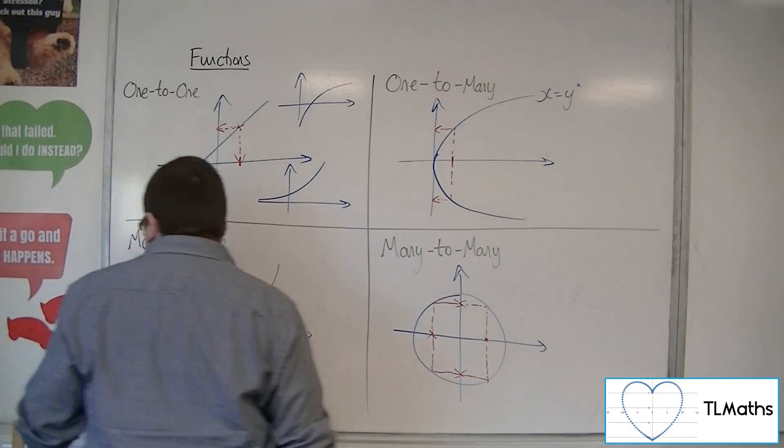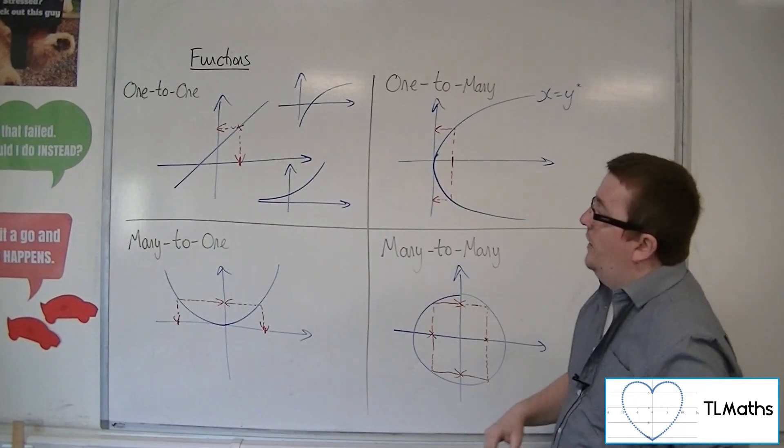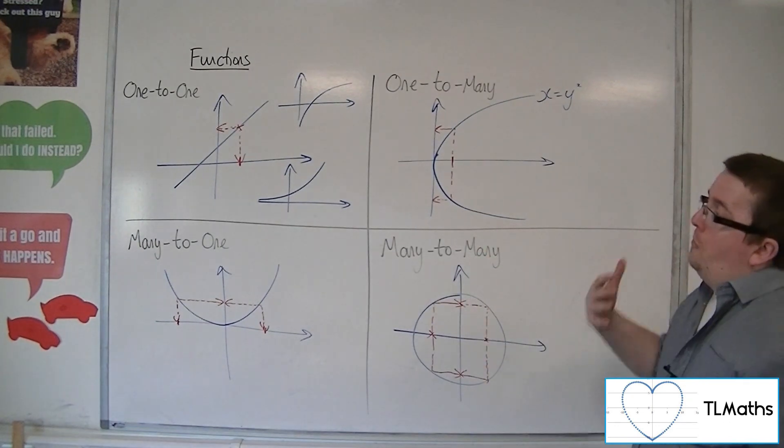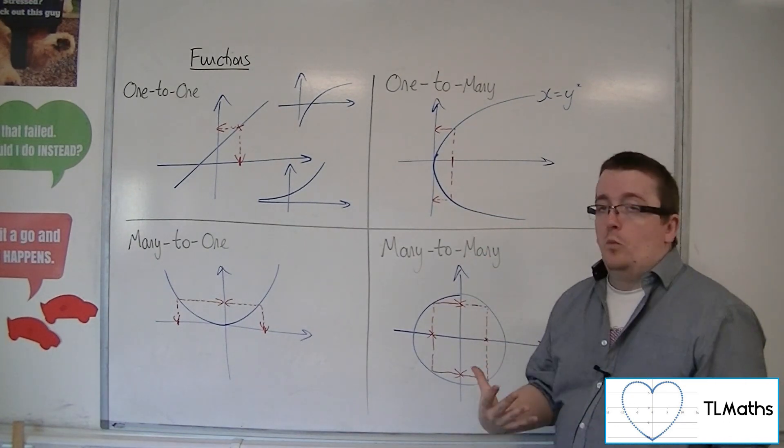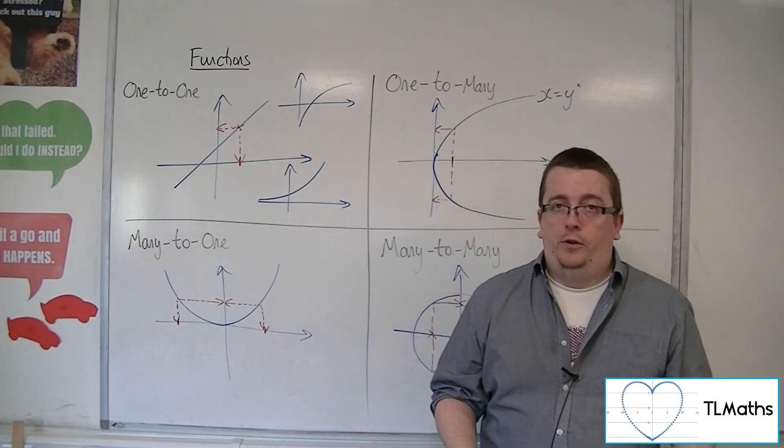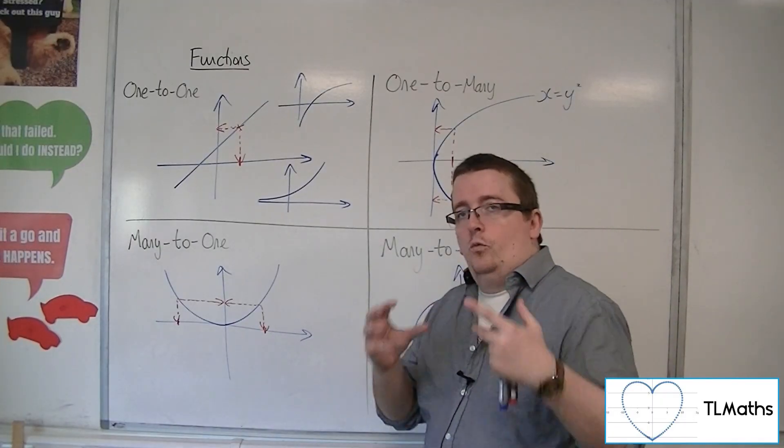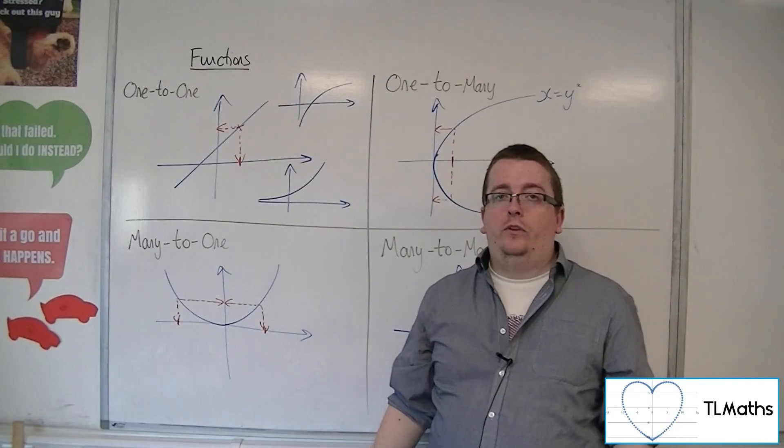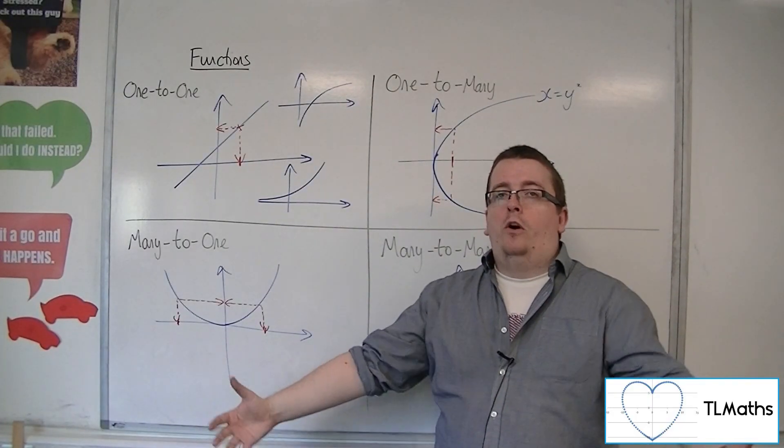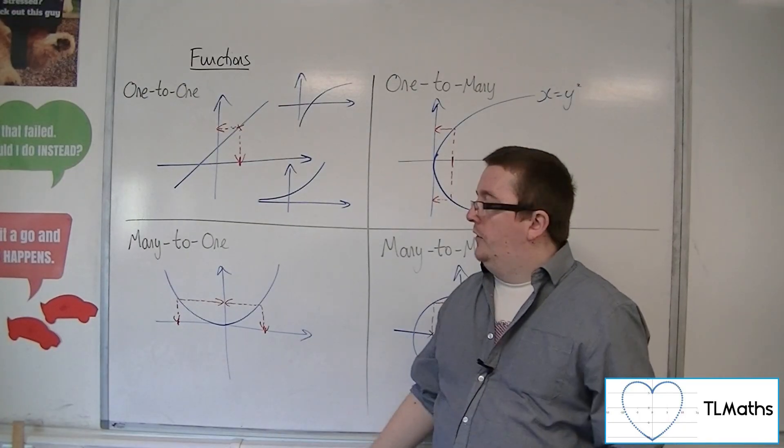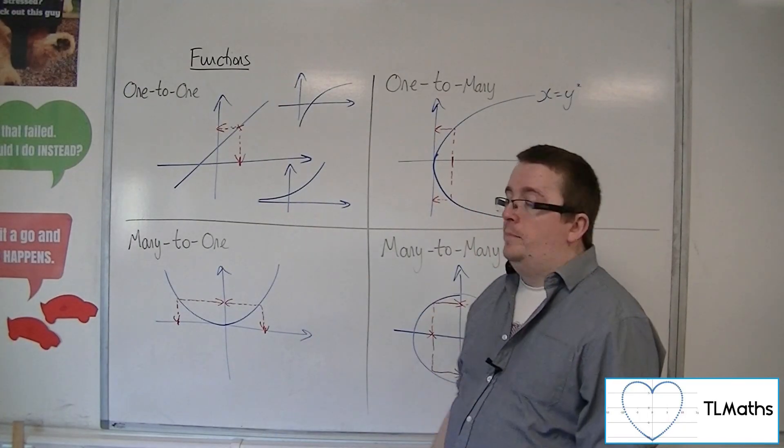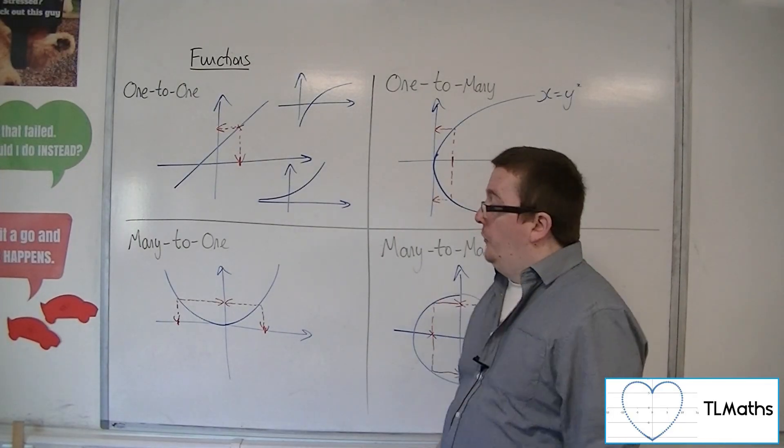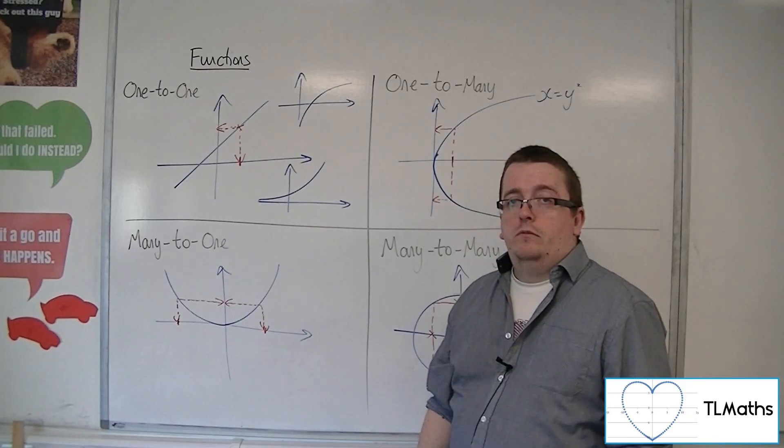The key idea coming from this is, which of these are functions? Remember, from our definition of what a function was, one input, one output. That would infer that the one-to-ones are the only functions. That's what you might infer from that, but that's not the case, because clearly f of x could be equal to x squared. That is still a function. x squared is a function.